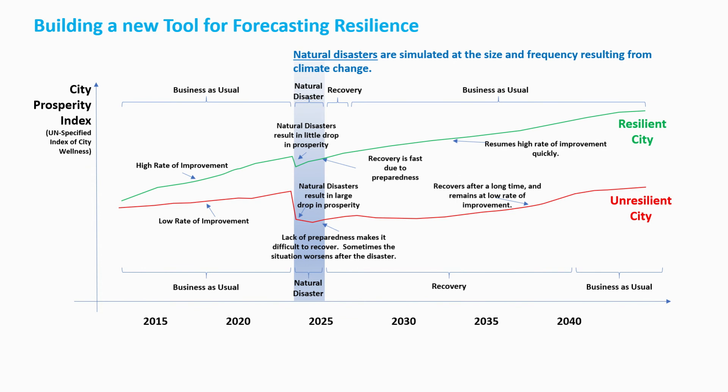If you think of examples like Puerto Rico, they were in an economic downturn before two major hurricanes hit them in 2017. It is probably going to be about 20 years before they return back to the level of productivity they were at before those events occurred.